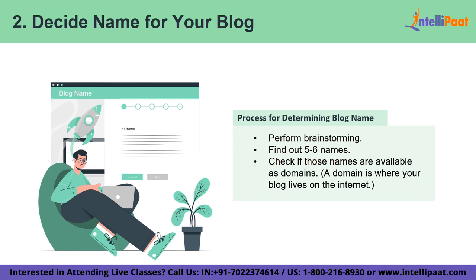Now it's time to see if those names are available as domains. A domain is where your blog lives on the internet. For example, intellipath.com is our domain — it's something you type into the address bar to find us. You can't use this domain name because we already own it, so you'll have to find your own unique and new brand name. Once you find that, it's time to move on to the next step.